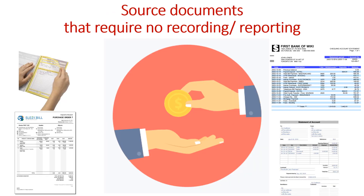Now let's revisit the terminology. I've already talked about what we mean by source. But what do we mean by documents? A document is some form of stimulus material that features information such as dates, dollar amounts, summaries or descriptions of transactions or financial events, and details about who the seller is and who the payer is.